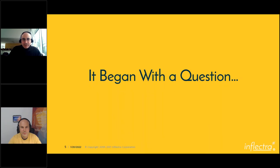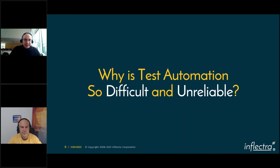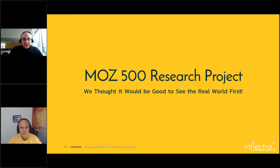It really began with a question. We started this project a few years ago, and it began with this simple question: why is test automation so difficult and unreliable? We go to a lot of testing conferences, and over the years it seemed like everyone wants to do test automation, everyone is doing test automation, and everyone is failing at test automation. It seems to be a very difficult problem, and the unreliability aspect is the big problem.